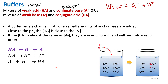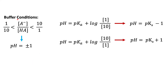Buffers work near the equivalence point, meaning there is a certain range where buffers can function. We want the concentrations of products and reactants to be relatively equal so they continually neutralize one another. We can see the ratio of conjugate base to weak acid, and this ratio defines the range in which the buffer system will work.